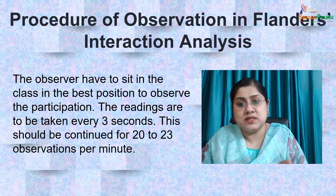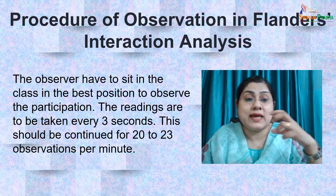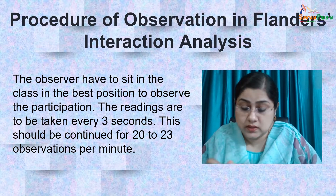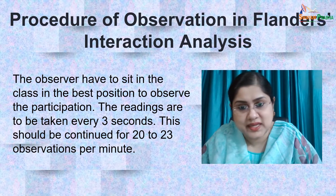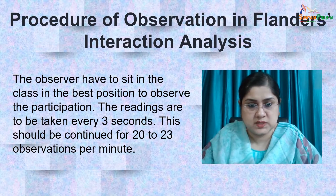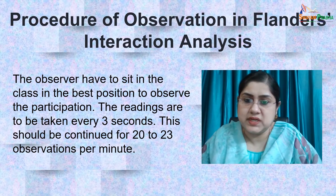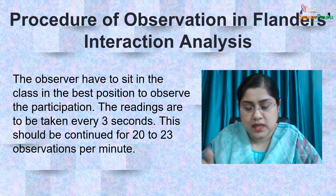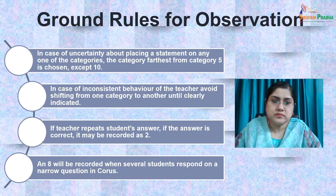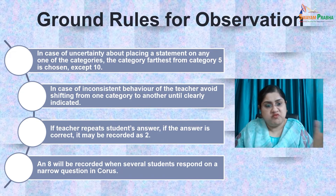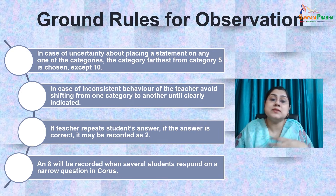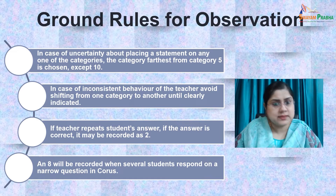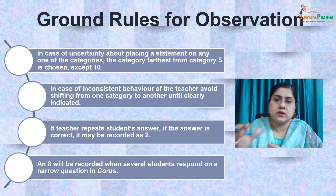The observer writes down the category number while simultaneously assessing communication in the next three-second period. This rate of observation is normally 20 to 25 observations per minute, since a note is taken every three seconds. Flanders also set some ground rules to be followed while noting down observations, which we must follow to make a good interaction analysis.